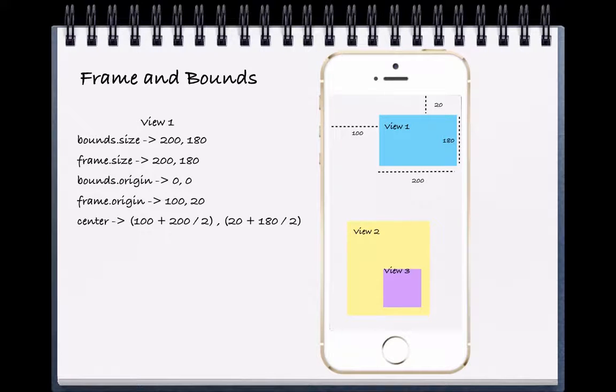A view's bounds is its coordinate system, with itself as a reference frame. What does this mean? Well, its origin is usually 0,0. Its size is also simply its width and height.